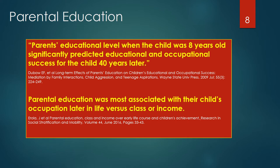Deboe et al. demonstrated that a parent's — mother's and father's — educational level, when their children were eight years old, significantly predicted the future educational level and occupational success of their children up to 40 years later. Arola et al., using Finnish registry data, matched the occupation of 29,282 children through 29 years old with information on their parents' education, class and income. Parental education was most associated with their child's occupation later in life versus class or income.